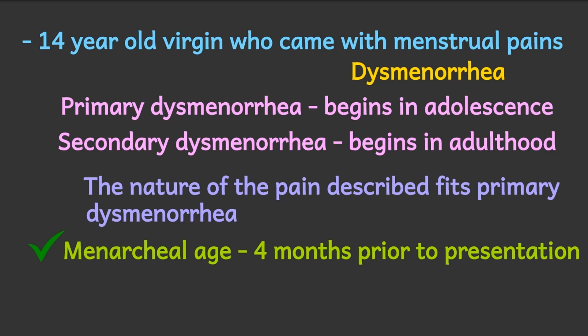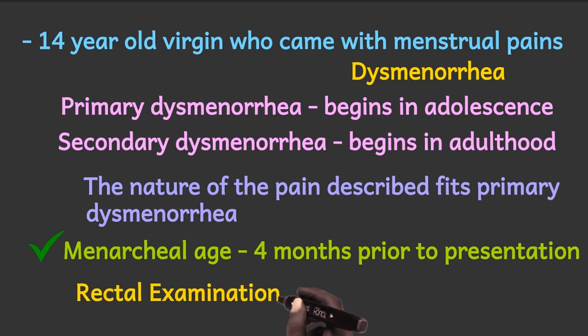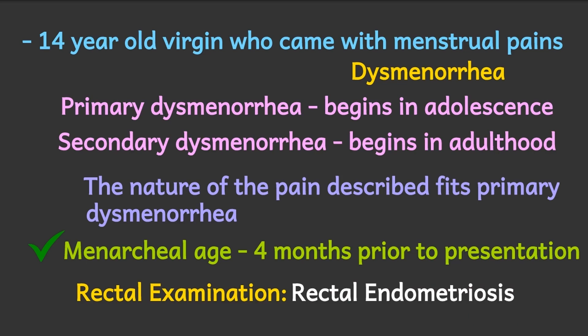You are probably wondering why rectal examination was done and reported. It was done to rule out rectal endometriosis. Endometriosis is the presence of endometrial tissue in parts of the body other than the endometrium. So if you have endometrial tissue in the rectum, you have rectal endometriosis — and that is what the question was ruling out. Endometriosis is the most common cause of secondary dysmenorrhea. We have prepared a comprehensive lecture on dysmenorrhea; the link is available in the video description below.